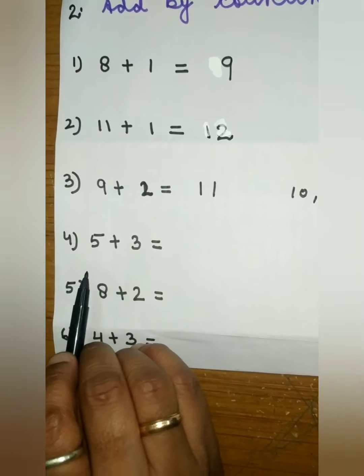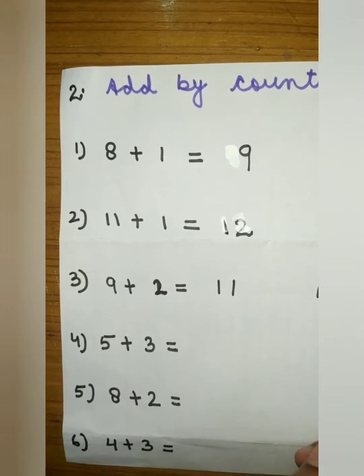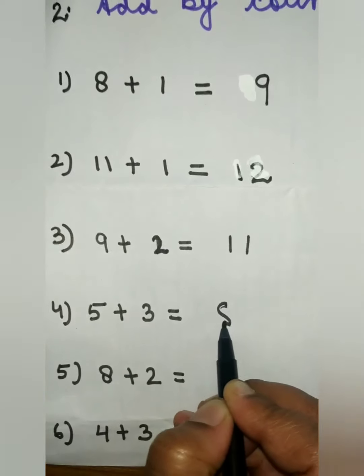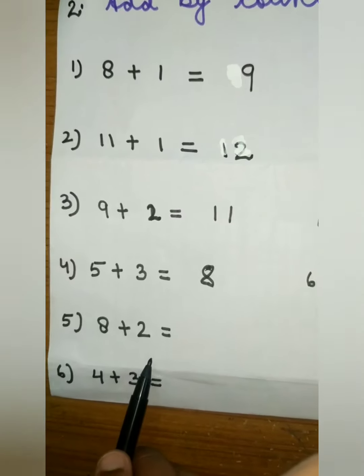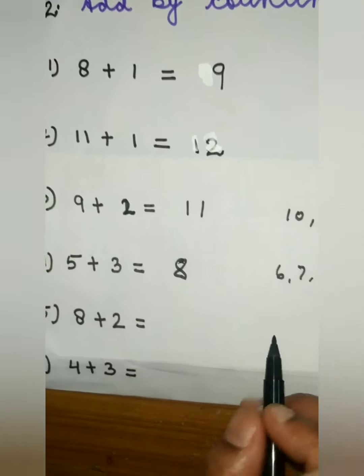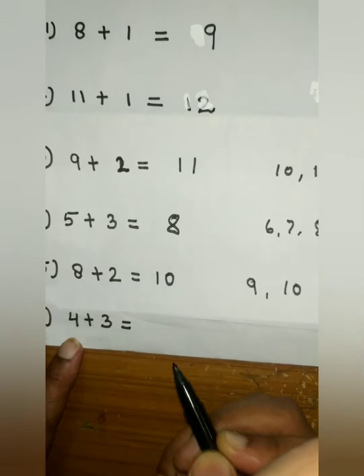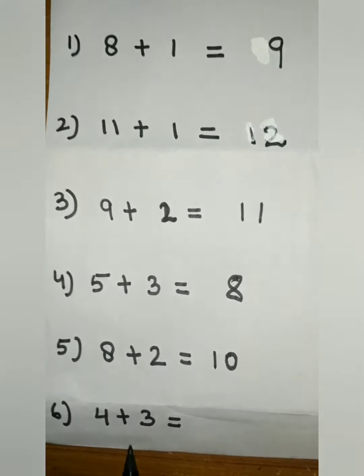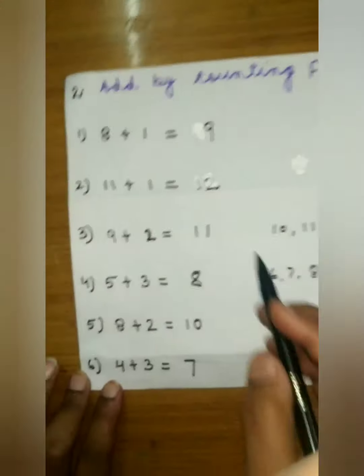The next example is 5 plus 3. Count three numbers after five: six, seven, eight. So the answer is eight. Next example is 8 plus 2. Count two numbers after eight: nine and ten. The answer is ten. Now the next example is 4 plus 3. Count three numbers after four: five, six, seven. The answer is seven.